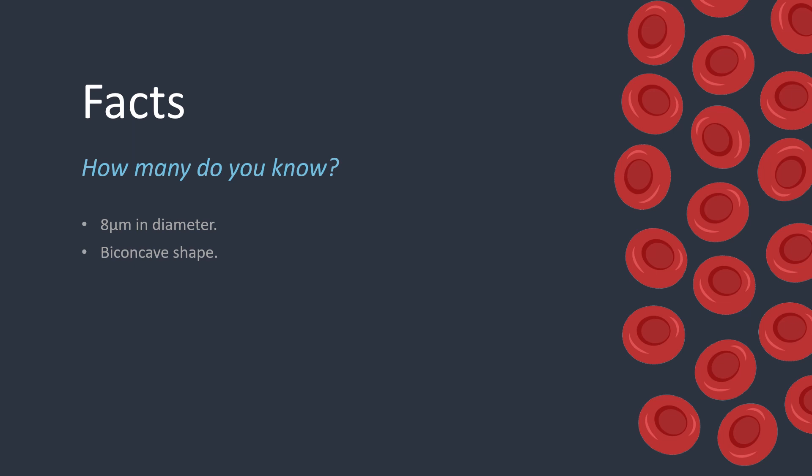Normal red cells are described as being biconcave in shape, meaning they are thinner in the center than they are on the outside. This also gives the area of central pallor when looking at them under the microscope. Mature red cells do not contain a nucleus. However, this is not how their journey starts. Throughout the various stages of maturation, the normal blasts become smaller until the nucleus is finally expelled from the cell, forming a reticulocyte.